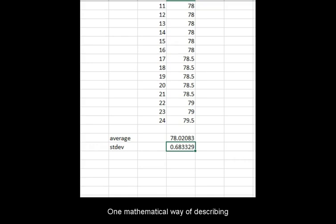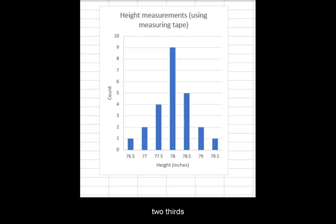One mathematical way of describing the spread of the measurements is known as standard deviation. The precise mathematical definition will not be discussed here. For our purposes, it is enough that you understand that one standard deviation is the distance in value of the measurement within which two-thirds of the measurement can be found.